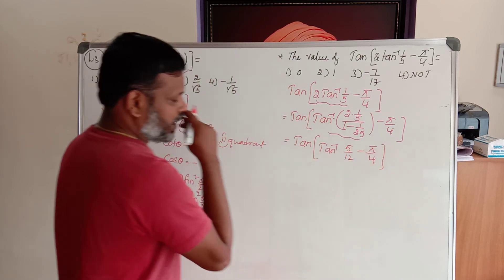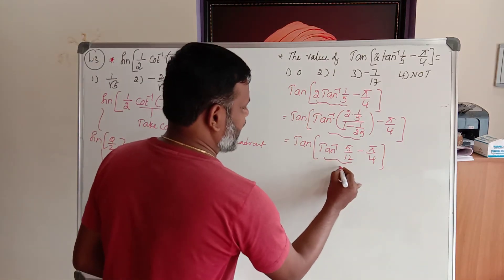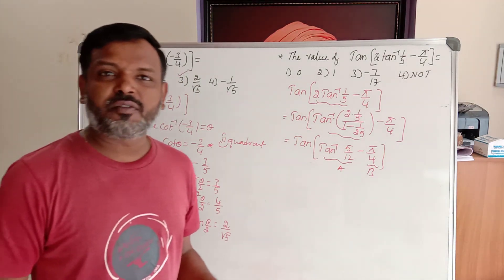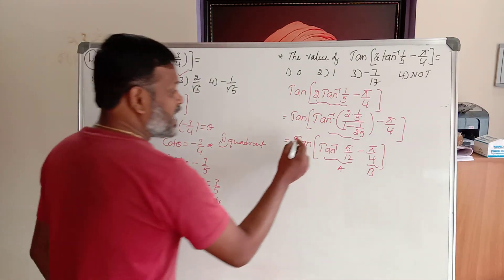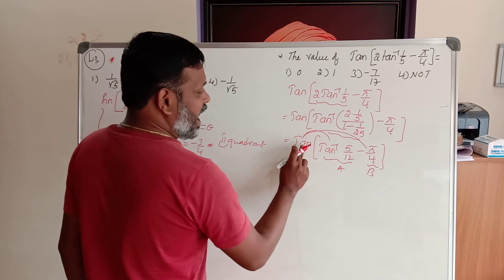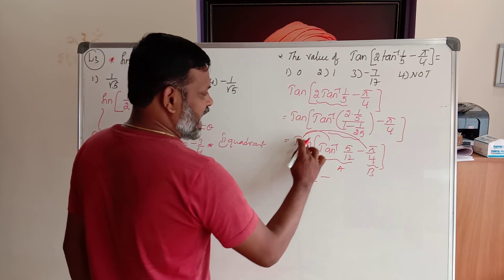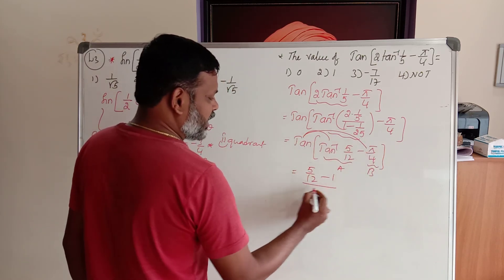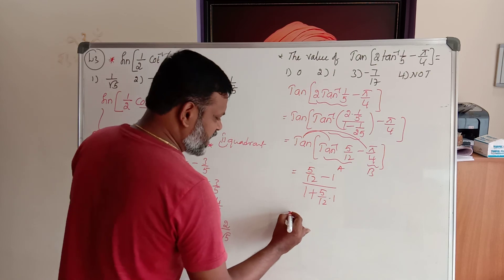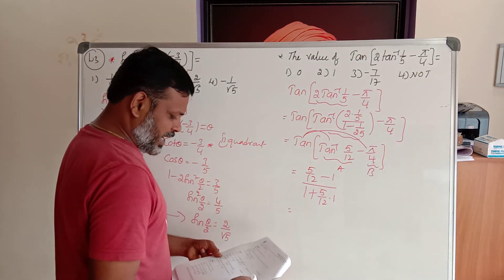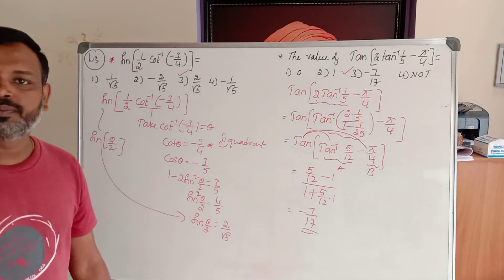Have a look again. Now the formula turns out to be tan(A minus B). Keep tan inverse (5 by 12) as A and 5 by 4 as B. Tan(A minus B) equals (tan A minus tan B) divided by (1 plus tan A into tan B). So tan of tan inverse (5 by 12) — tan and tan inverse get cancelled — gives 5 by 12 minus tan B. Tan of (5 by 4) is 1. Divided by 1 plus (5 by 12) into 1. By simplifying, you will get the value minus 7 divided by 17. Is it clear? So this is the solution. Thank you.